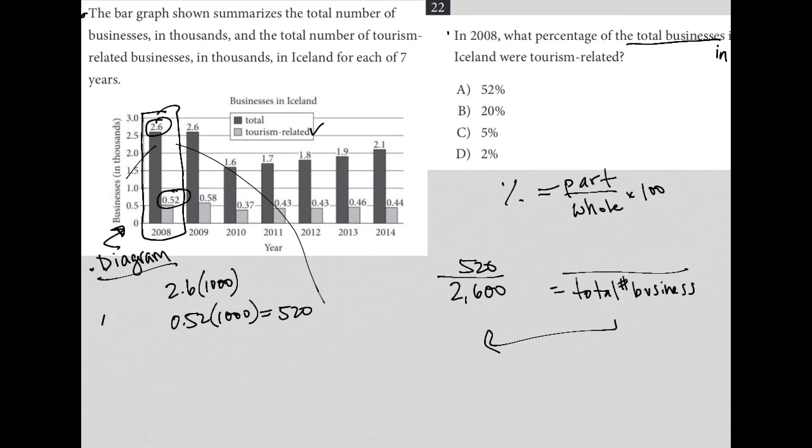And we can then go to our calculator and say, what is 520 divided by 2600? I get 0.2. Last step is to multiply that by 100, so 0.2 times 100 is equal to 20%. And therefore, the correct answer here is choice B.